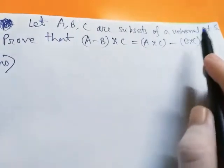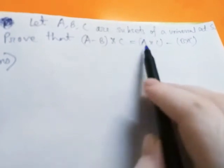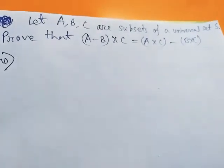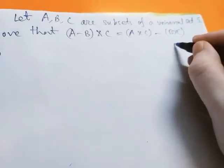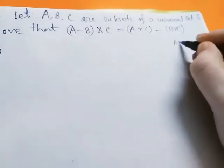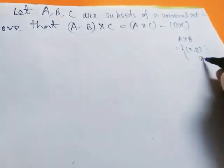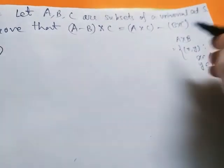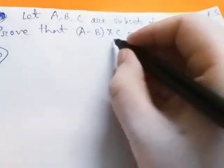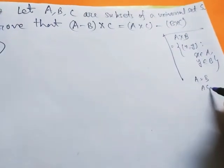Let A, B, C be subsets of universal set S. Prove that (A minus B) cross C equals (A cross C) minus (B cross C). By definition of Cartesian product, A cross B contains those ordered pairs (x, y) such that x belongs to A and y belongs to B. To show that two sets are equal, we have to show A is a subset of B and B is a subset of A.